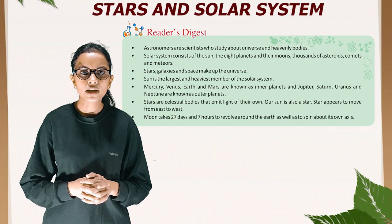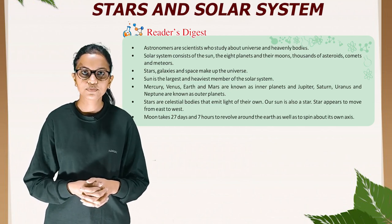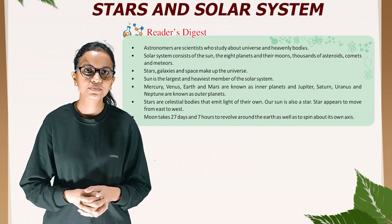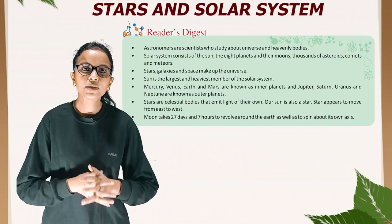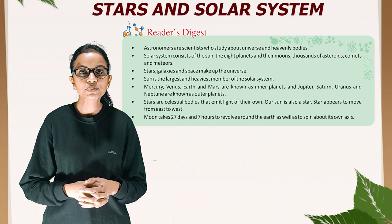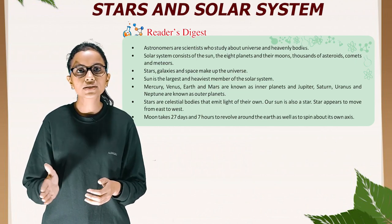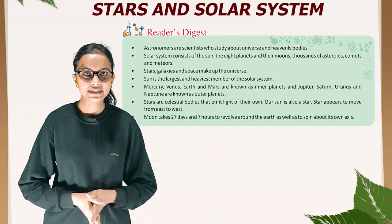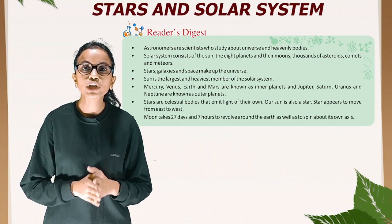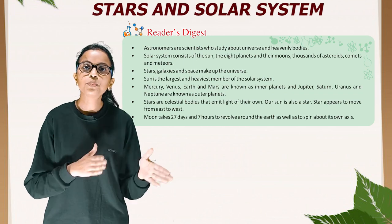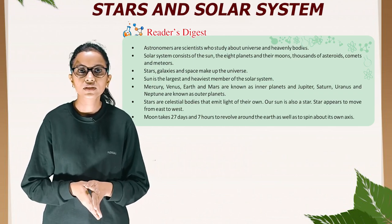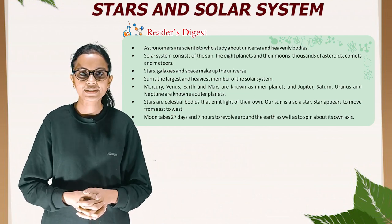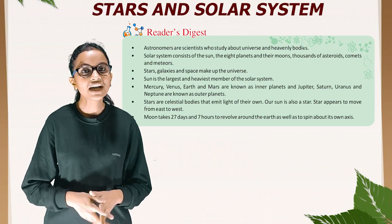Astronomers are scientists who study the universe and heavenly bodies. The solar system consists of the Sun, the eight planets and their moons, thousands of asteroids, comets, and meteors. Stars, galaxies, and space make up the universe. The Sun is the largest and heaviest member of the solar system. Mercury, Venus, Earth, and Mars are known as inner planets; Jupiter, Saturn, Uranus, and Neptune are known as outer planets. Stars are celestial bodies that emit light of their own — our Sun is also a star. Stars appear to move from east to west. The Moon takes 27 days and 7 hours to revolve around the Earth as well as to spin about its own axis.